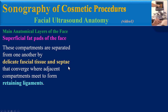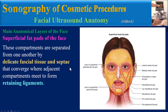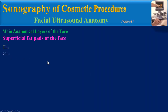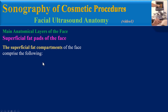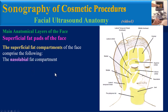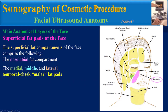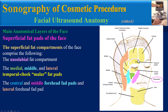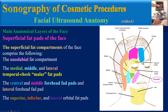The superficial fat pads of the face: these compartments are separated from one another by delicate facial tissue and septae that converge where adjacent compartments meet to form retaining ligaments. The superficial fat compartments of the face comprise the nasolabial fat compartments, the medial, middle, and lateral temporal cheek or molar fat pads, the central and middle forehead fat pads, and lateral forehead fat pads, which are actually the upper extension of the lateral temporal cheek fat pad. Also included are the superior, inferior, and lateral orbital fat pads.